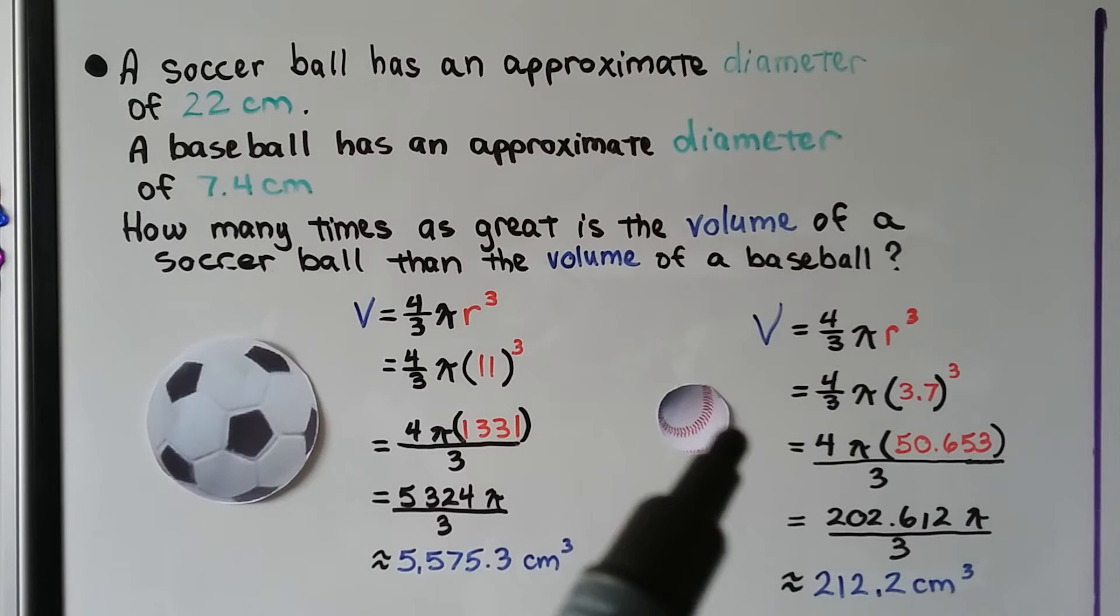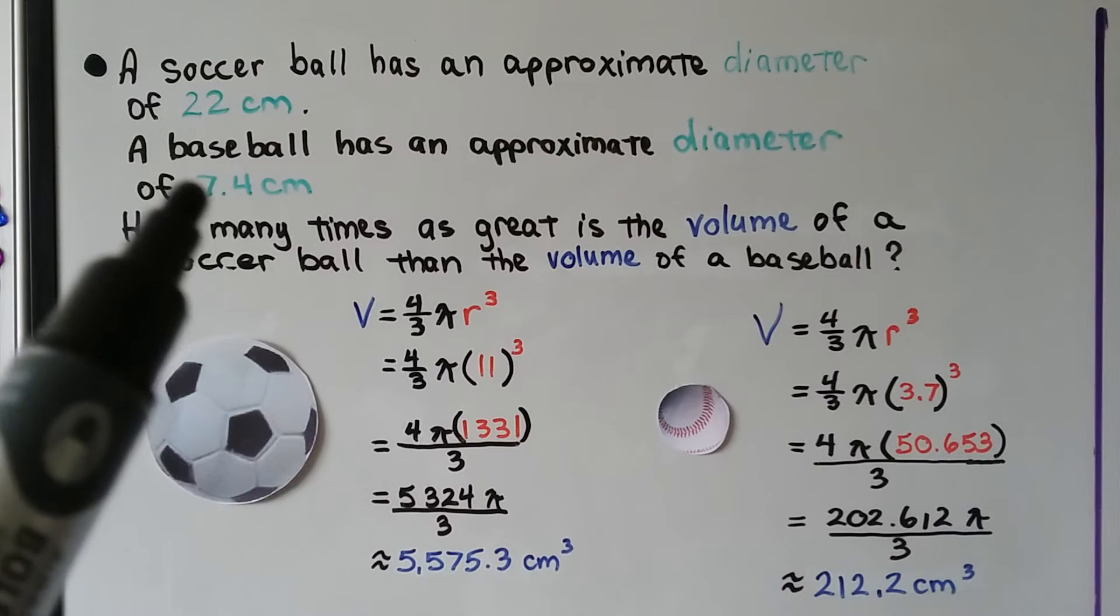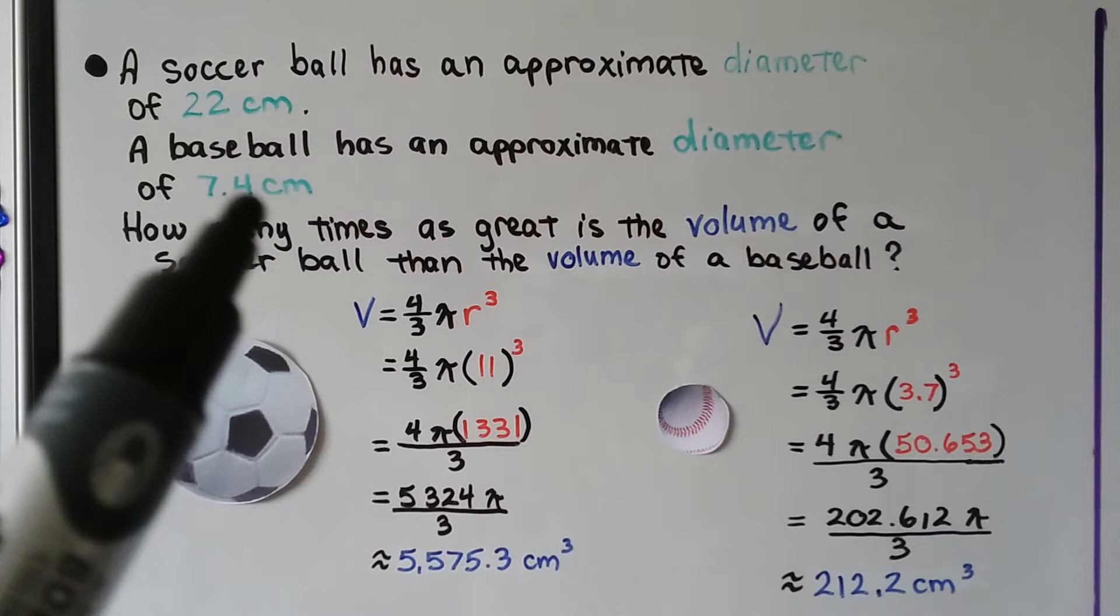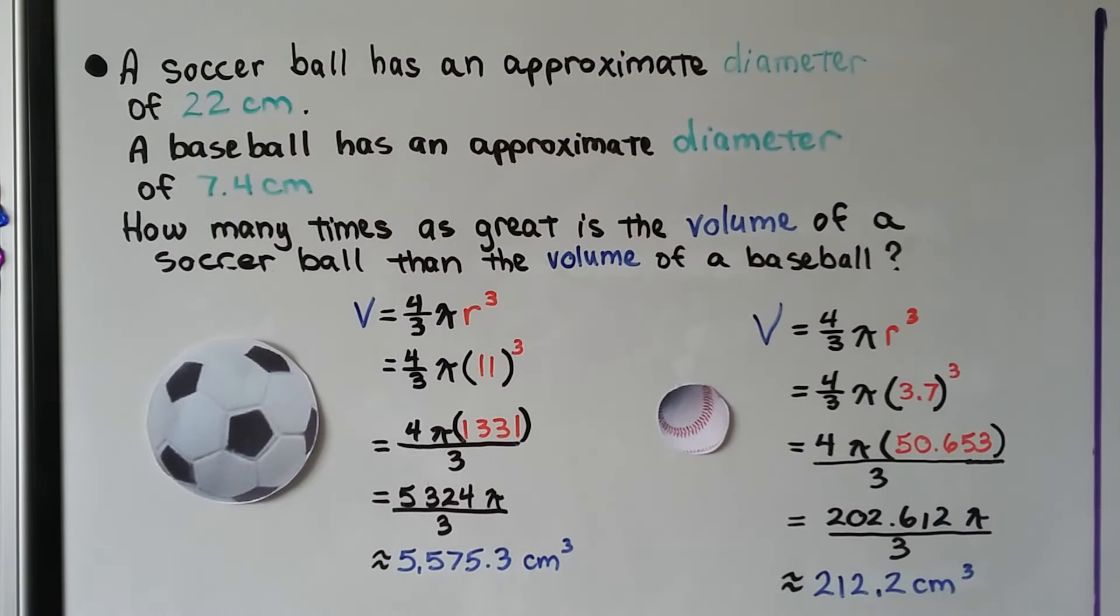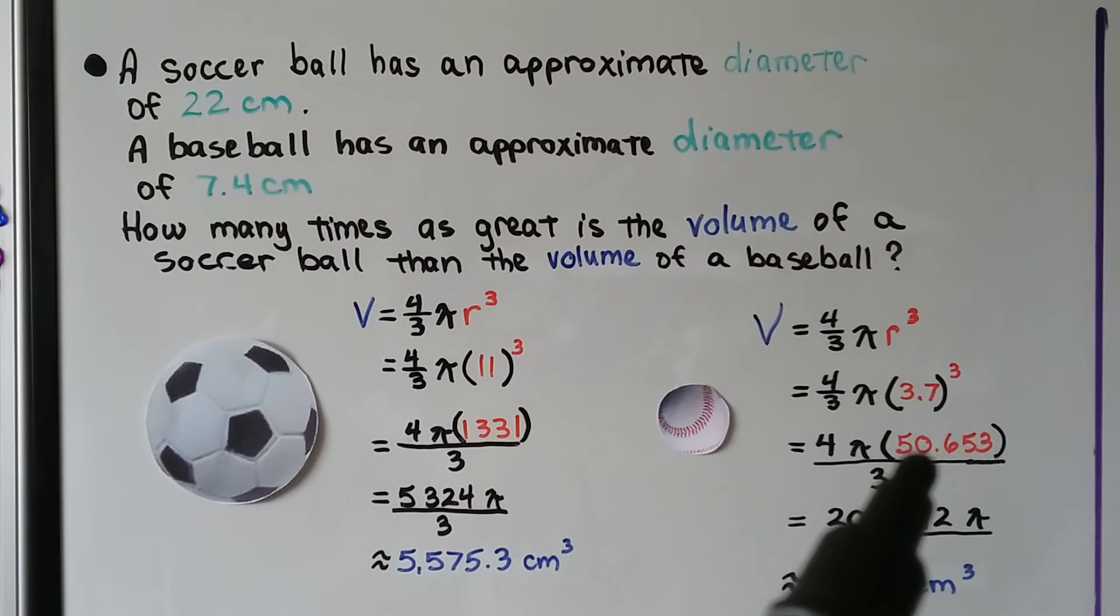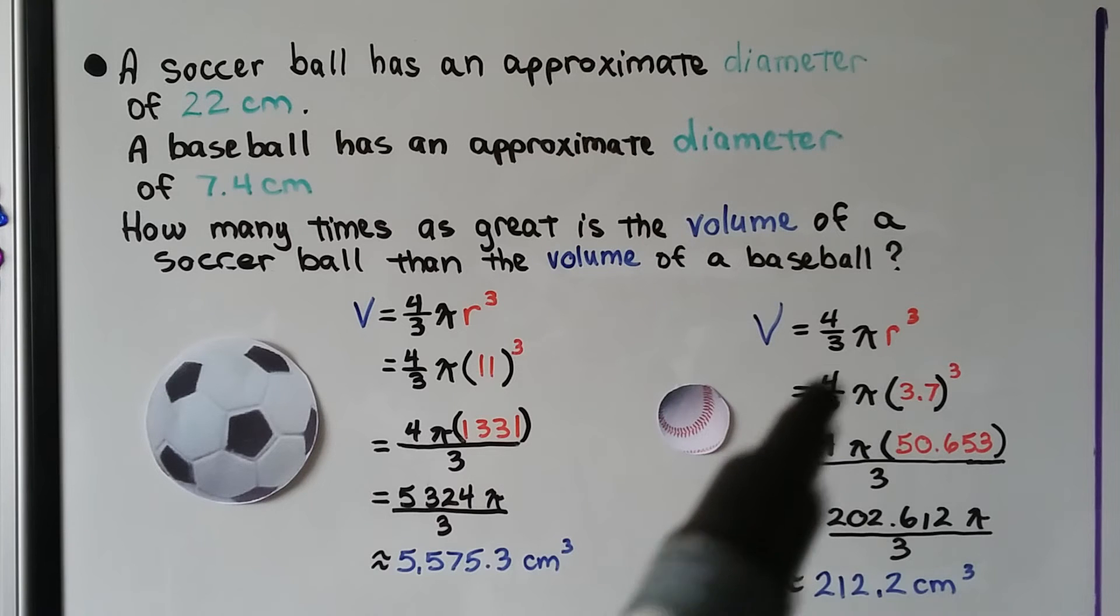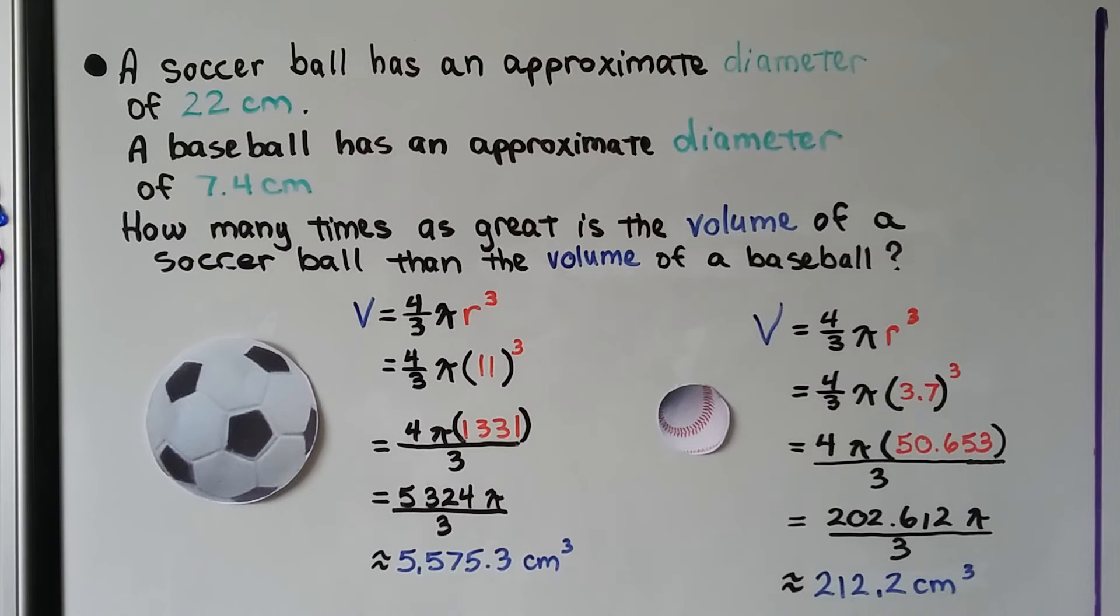And that'll give us approximately 5,575.3 centimeters cubed. For the baseball, if this is our diameter, half of it is the radius. Half of 7 is 3.5, and then the other 2 centimeters for that part, we have 3.7 cubed. We do that and get 50.653. We can write the whole thing as 4 pi times the 50.653 over the 3. We do the math and we get 202.612 pi over 3.